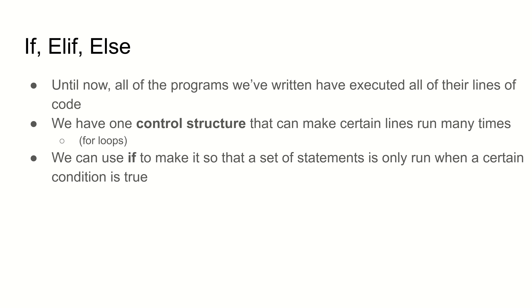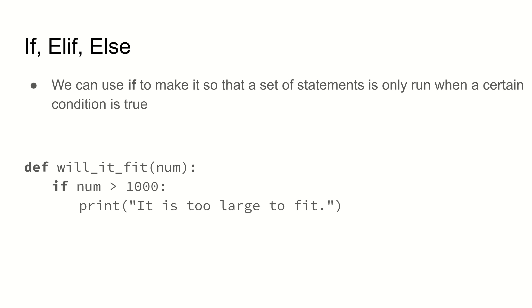The for loop does check a condition, like have we run out of numbers in our range? An if statement is another control structure — another structure in the language that allows us to run a set of statements only when a certain condition is true. If that condition is false, then we skip those lines. So here's an example of an if statement.